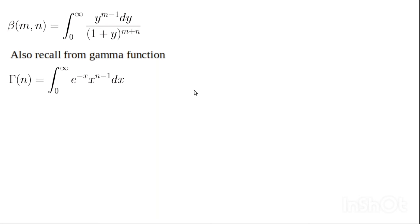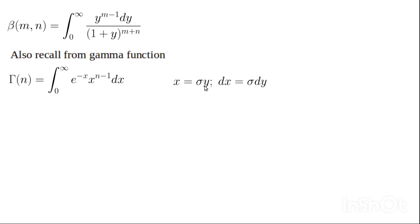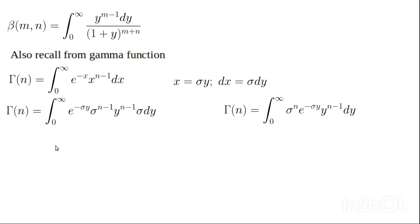If we make a substitution of the form x = σy, and differentiate to get dx = σ dσ, then substitute back into the gamma function expression, on simplification we have a new form. This part, σ^(n-1), is a constant we can bring out, so it can be re-expressed with σ^(n-1) factored outside the integral.